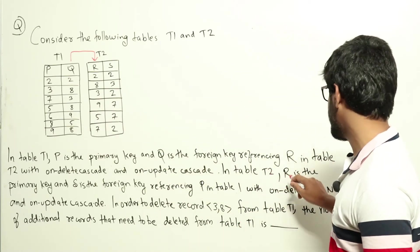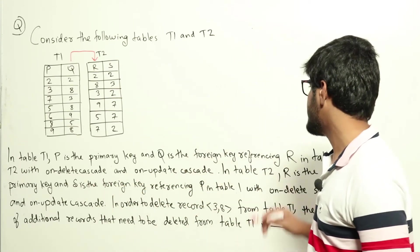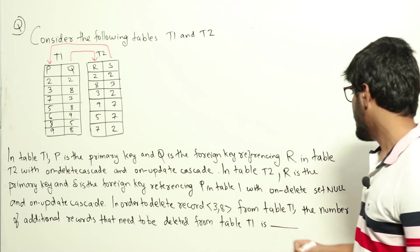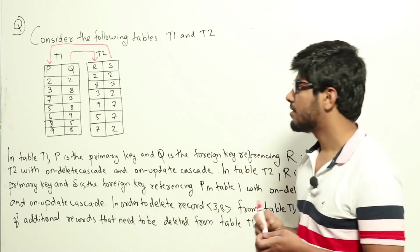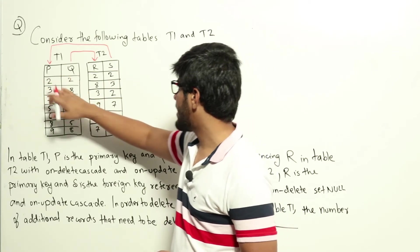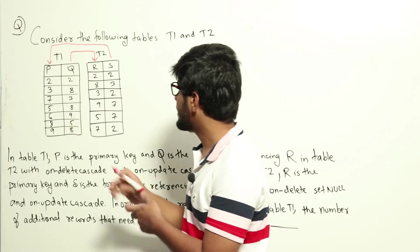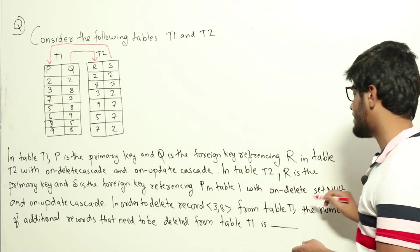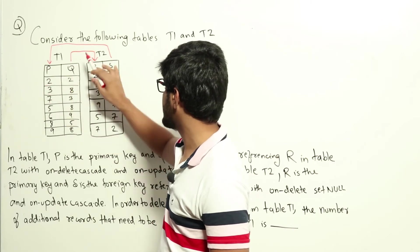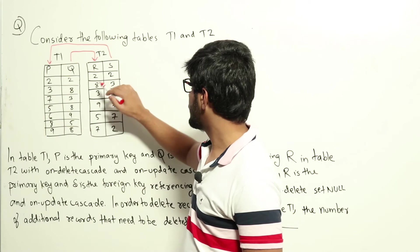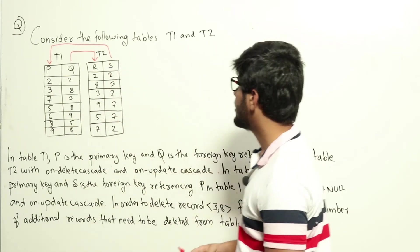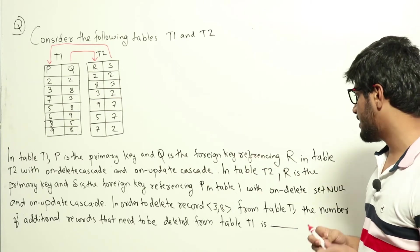The other constraint is: R is the primary key and S is the foreign key referencing P in table T1, with ON DELETE SET NULL and ON UPDATE CASCADE. This means whenever something in T1 is deleted, whoever is referencing that P value in table T2 should have their S value set to null. For example, if I am deleting row (2,2) from T1, S is referencing the P column, so whoever is referencing P=2 in T2 — that row's S value should be set null. That is ON DELETE SET NULL.